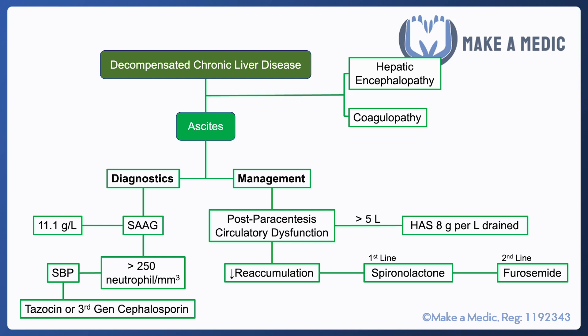A couple of other consequences of decompensated chronic liver disease include hepatic encephalopathy, where the liver is no longer detoxifying substances absorbed within our GI tract and they enter the systemic circulation affecting the brain. The mainstay of managing hepatic encephalopathy includes ensuring patients are opening their bowels regularly and using drugs that modify gut microbiome such as rifaximin. Finally, coagulopathy is managed by giving vitamin K in the short term, and an OGD is also an important investigation to identify varices and deal with them as required.